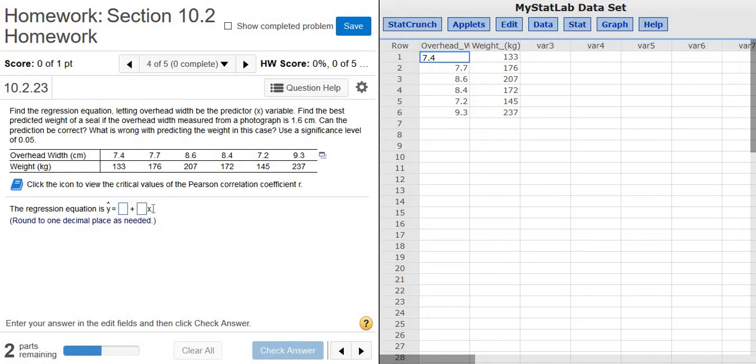In this problem, we're given a table and we have to find the regression equation. So the first thing you do is you click this little box here and you click Open in StatCrunch. When you do that, all the data gets typed into StatCrunch for you, so it's really nice.